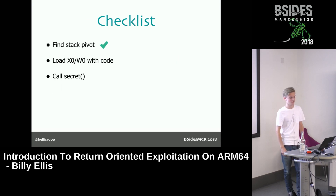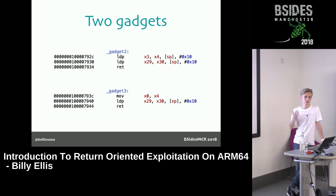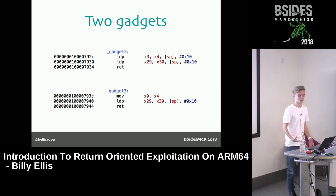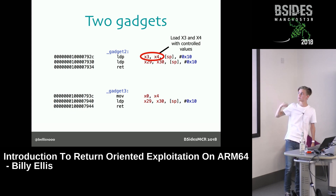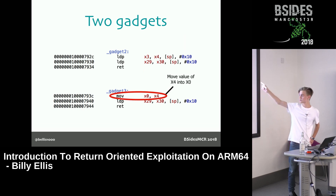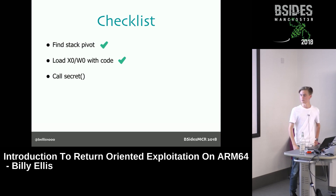For loading X0 with the secret code, here are two gadgets we'll use — you could theoretically do this with one gadget, but I wanted to replicate a more real-world ROP scenario where you work with what's available. Often gadgets do kind of what you need but with side effects. The first gadget lets us control X3 and X4 by loading a pair of registers from the stack. The second gadget then moves X4 into X0, so we control X0 in two steps. Finally, to call secret, we simply need the address of the secret function from disassembling the binary.